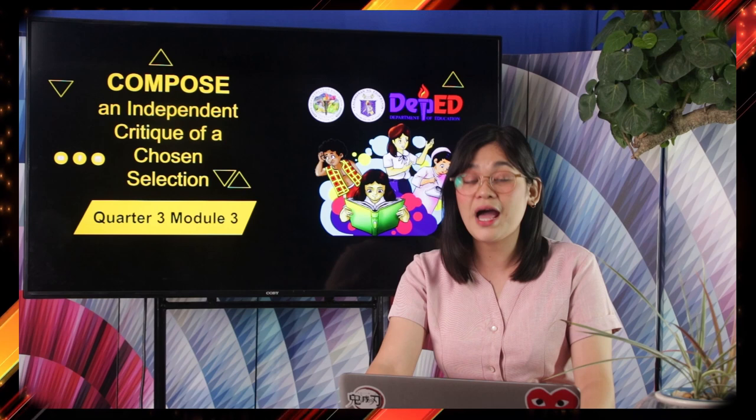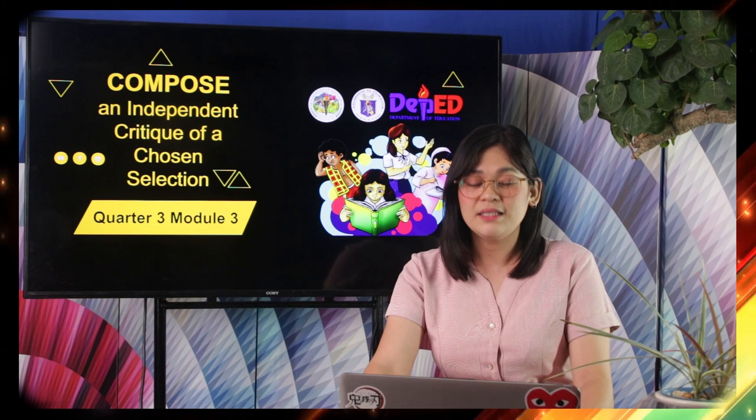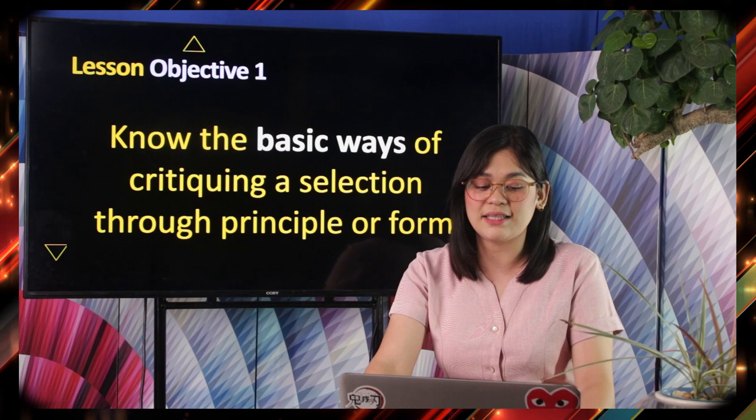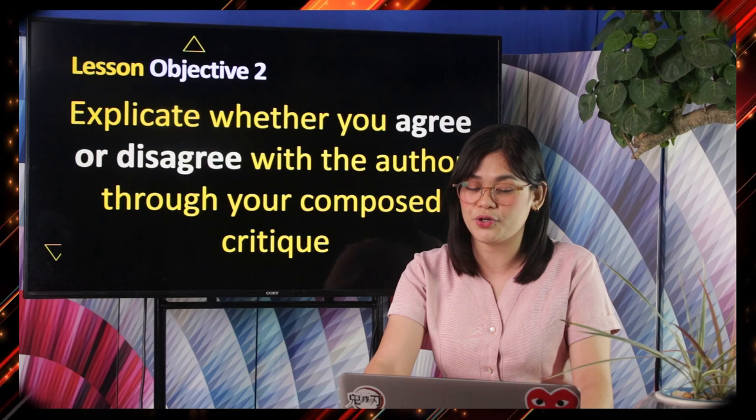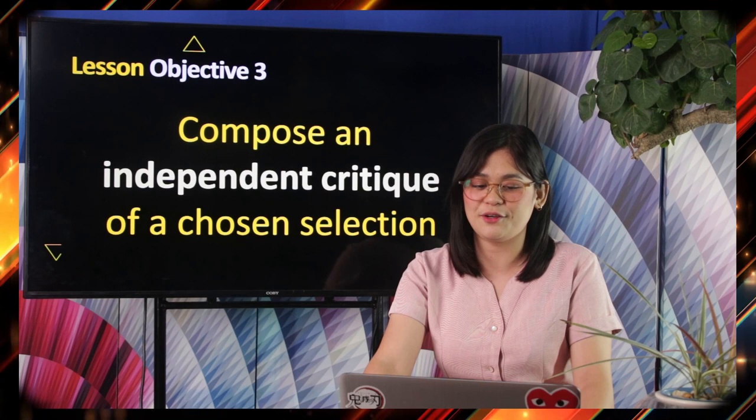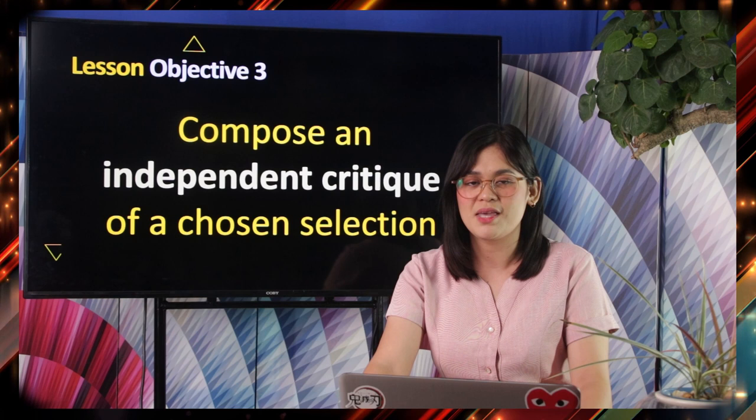As we head to our topic, let us be guided first by our objectives. Lesson objective number one: know the basic ways of critiquing a selection through principle or form. Lesson objective number two: explicate whether you agree or disagree with the author through your composed critique. And our third lesson objective: compose an independent critique of a chosen selection.